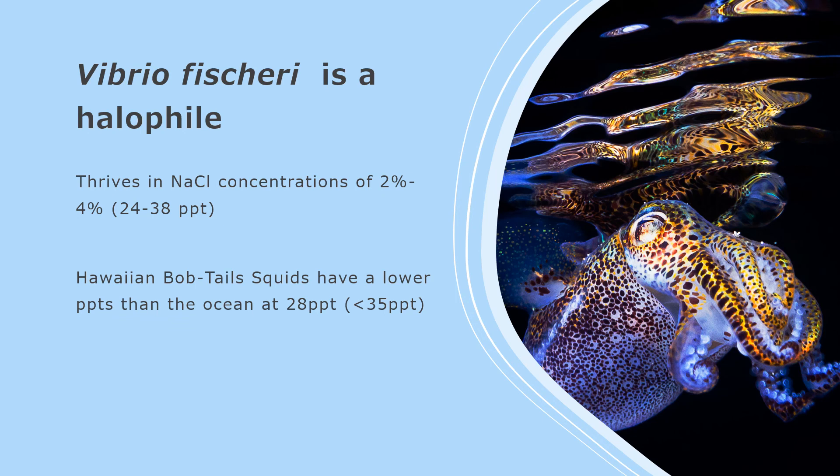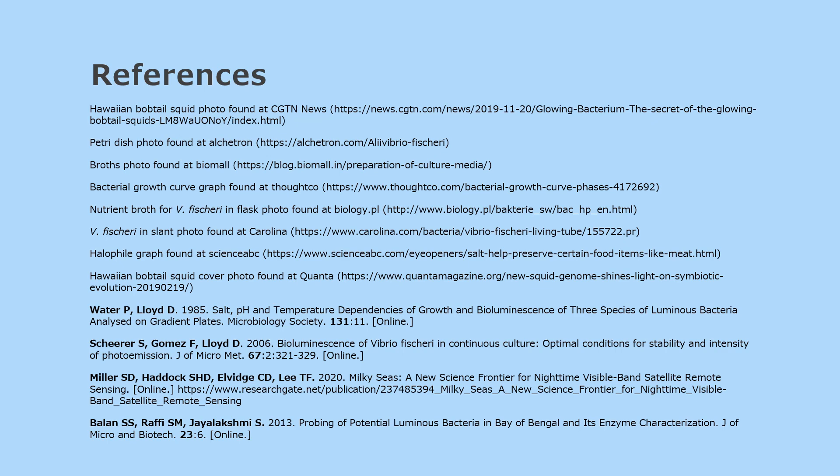Vibrio fischeri live in the light organ of Hawaiian bobtail squids, which indeed has a lower NaCl concentration than ocean water at 35 ppt, which matches Vibrio fischeri's optimal NaCl concentration at 28 ppt, or between 24–38 ppt. These are my references. Thank you for watching.